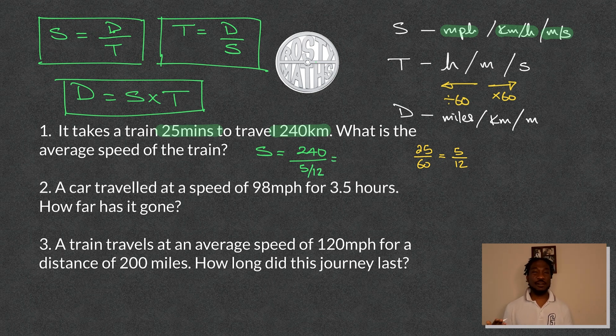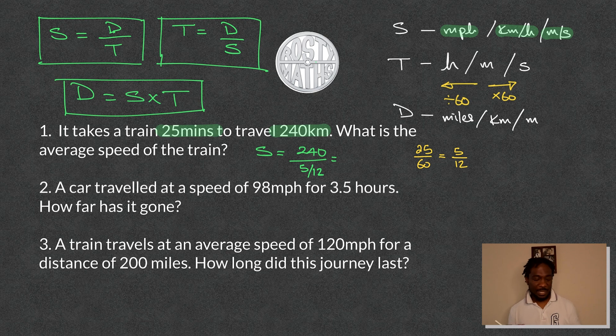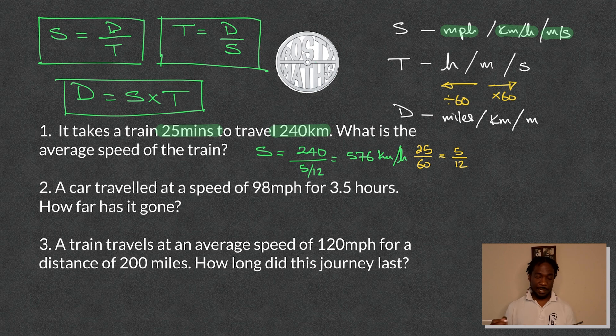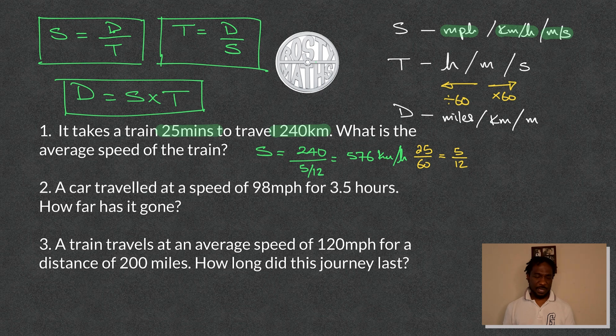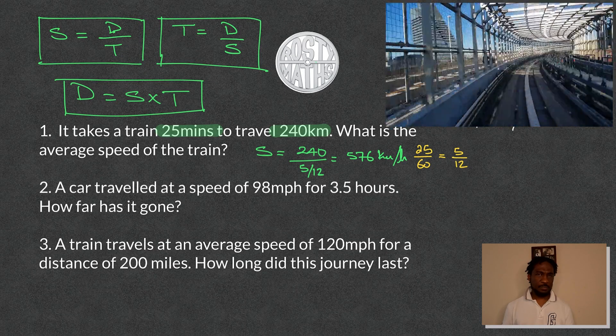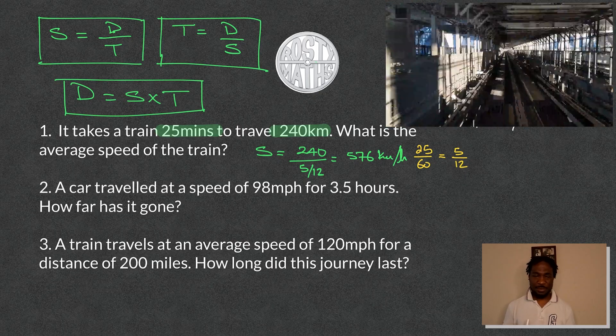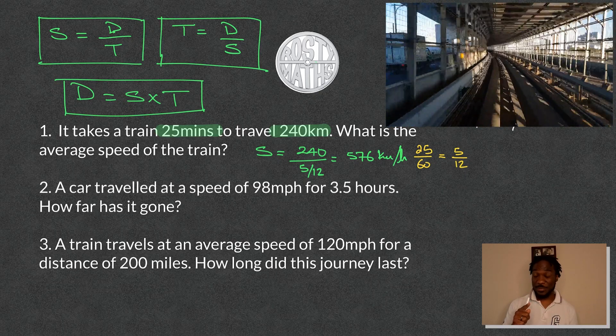Now there are many ways you can work this out. You can change it to a decimal if you like. For me, I'm just going to multiply by 12 and then divide by 5 when I'm done. But it's going to work out to 576 kilometers per hour. And that is done. And that's expected to be pretty fast because 240 kilometers is quite a distance. But to be doing it in 25 minutes, you have to be going really fast. 576 kilometers per hour fast, to be fair.